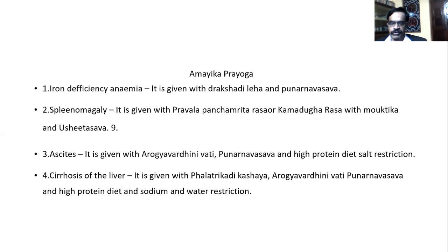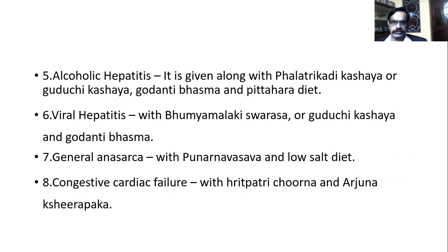Punarnavadi Mandura can be given in various disorders with suitable Anupana and adjuvants. In iron deficiency anemia, it is given with Drakshadialeha and Punarnavasava with high-protein diet and sodium restriction. In alcoholic hepatitis, it is given along with Patolakadi Kashaya, Guduchi Kashaya, Kumaryasava, and Pittahara diet. In viral hepatitis, it is given with Bhumyamalaki Swarasa or Guduchi Kashaya and Kumaryasava.